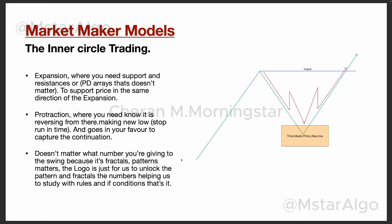We have only one pattern that repeats in the market. The expansion is where you need support and resistance, or the PD arrays, to support the directional bias. In this expansion, you're looking for some kind of support and resistance. You may have heard of fair value gaps, order blocks, and much more in this region, because ICT literally named every single thing inside this swing — sell-side liquidity, rejection block, order block, fair value gap, and imbalance.